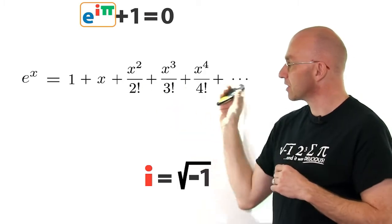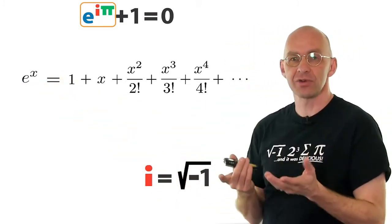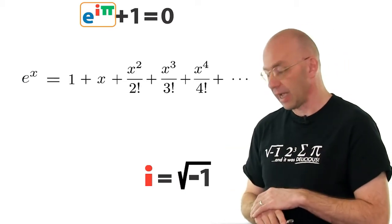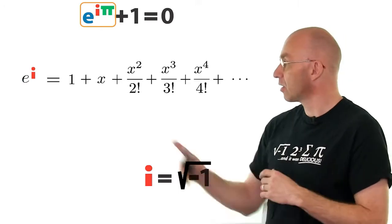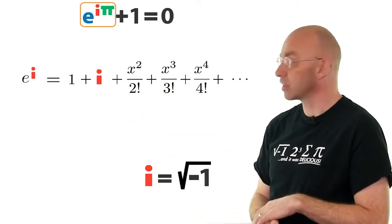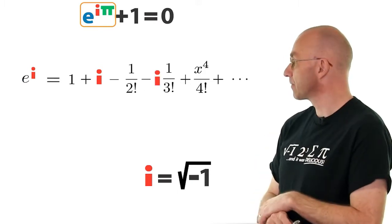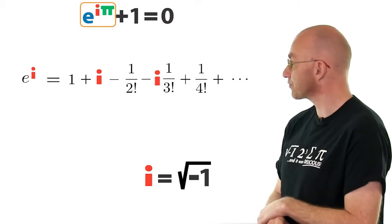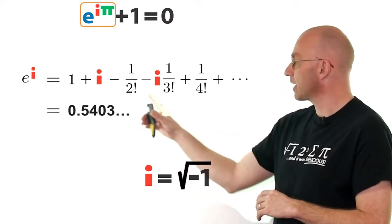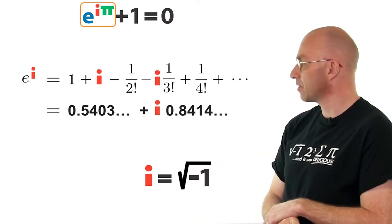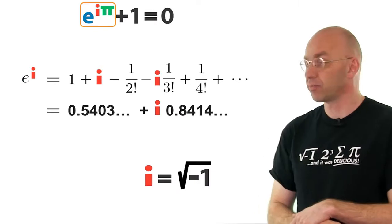Another thing we can do with this expression is use it to define the exponential function for other sorts of numbers that can be multiplied and added — for example, the complex numbers. So we can figure out what e to the power of i is by substituting i into the series. i squared is minus one, i cubed is i times minus one, and i to the power of four is just one. Adding up all terms without an i gives us one number, and all terms with an i gives us another. That's a complex number, and in this way we've defined what e to the power of i is.